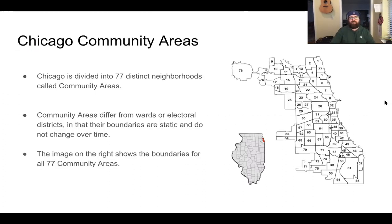Chicago is divided into 77 distinct neighborhoods called community areas. Community areas differ from wards or electoral districts in that their boundaries are static and don't change over time. The image on the right shows the boundaries for all 77 community areas.